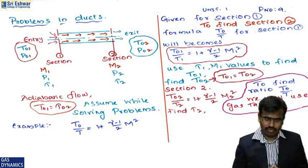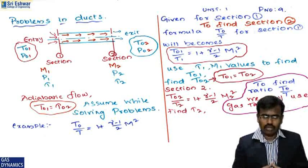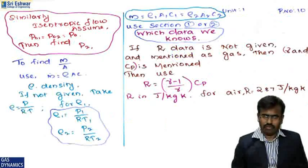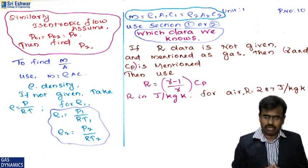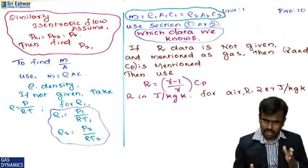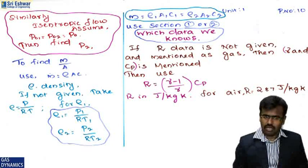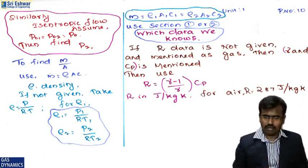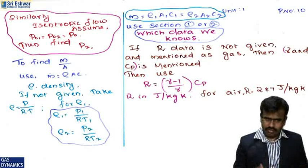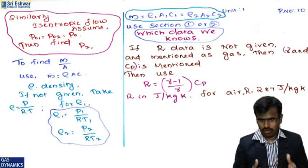From the given data about section 2's Mach number, calculate T₂ using the stagnation temperature ratio formula. Similarly find p₂. Assume p₀₁ = p₀₂ since stagnation pressure is constant. To find mass flow rate: ṁ = ρAc, where A is the cross-sectional area. If density is not given, use ρ = p/RT. So ρ₁ = p₁/RT₁ and ρ₂ = p₂/RT₂.